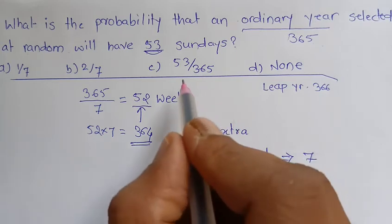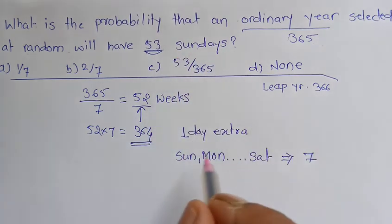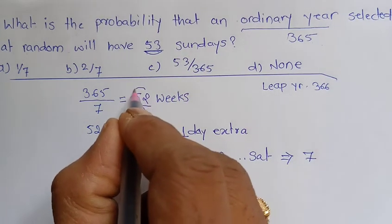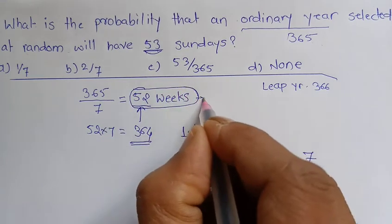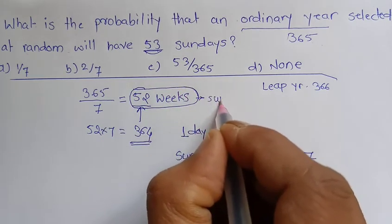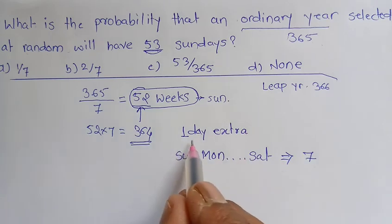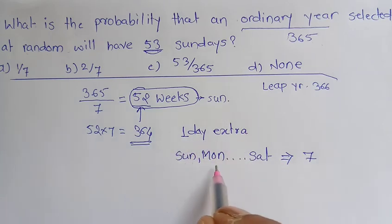But out of these seven options, they are asking for the 53rd Sunday. See, in these 52 weeks I am having 52 Sundays, right? I am having 52 Sundays. Now this one day which is extra, that could be Sunday or Monday or Tuesday or Thursday or Friday or Saturday.